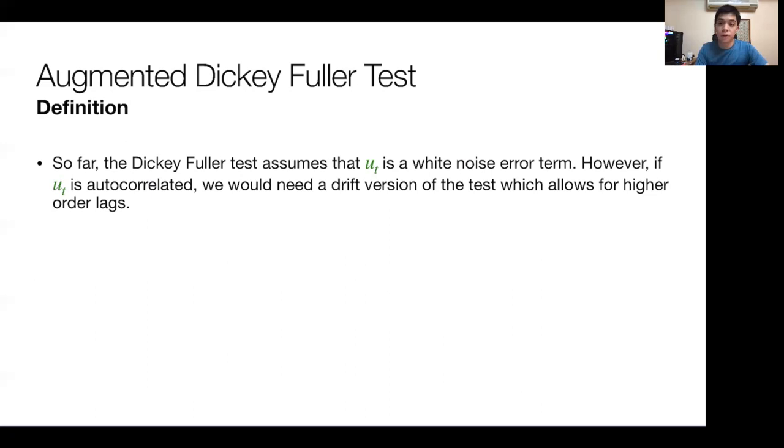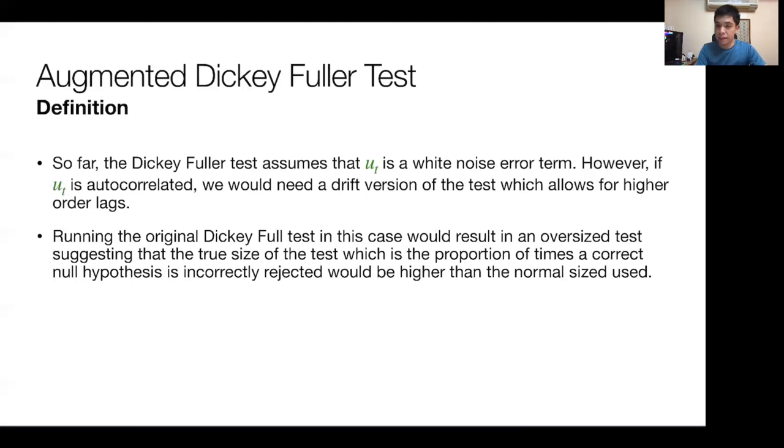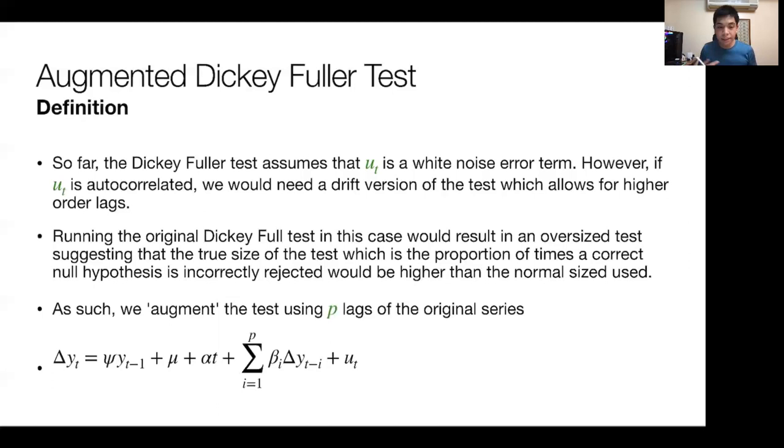In the regular Dickey-Fuller test, we assumed UT is a white noise error process and was uncorrelated, which has certain limitations. However, as researchers have noted, if the error term is autocorrelated with its past values, it would need some different version of the test which allows for higher order lags. If you run the original Dickey-Fuller test in that case, it would result in an oversized test result.